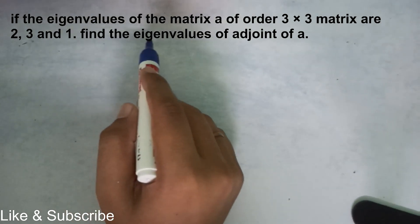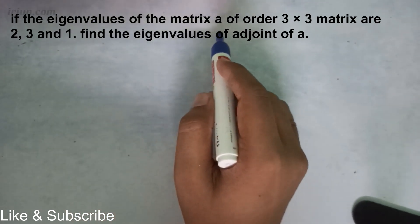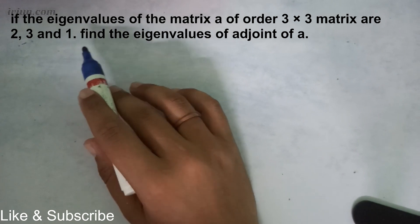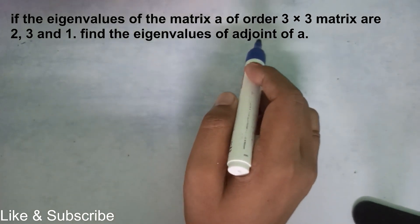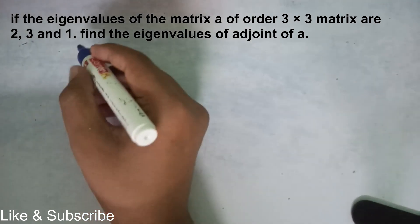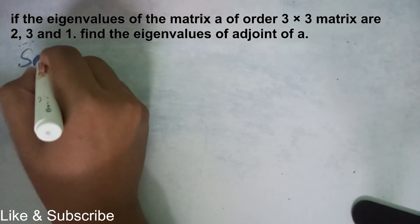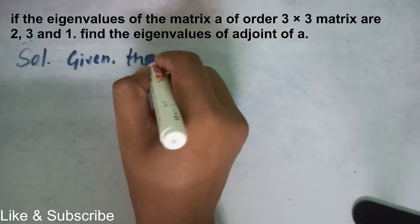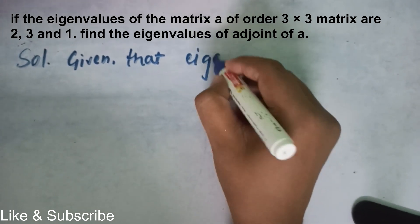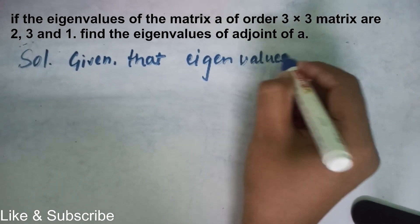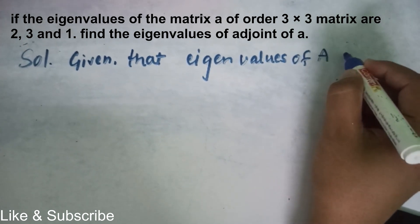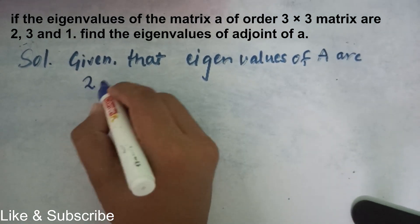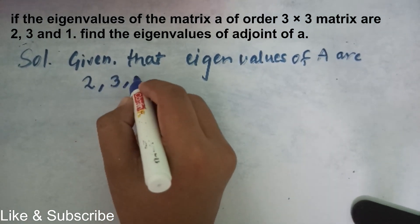Today's question is: if the eigenvalues of a 3×3 matrix E are two, three, and four, find the eigenvalues of the adjoint of matrix E. So let's do that. Given that the eigenvalues of matrix A are two, three, and four.